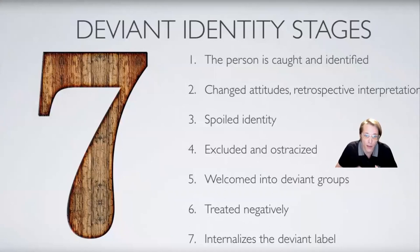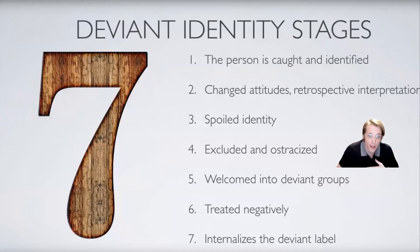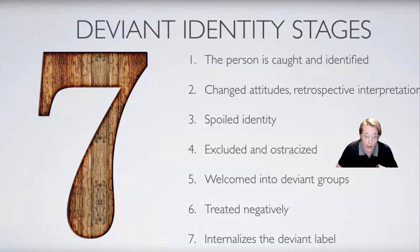The others identify seven stages of the deviant identity career — that is, a person shedding their innocent identity for a deviant one. First, the person is caught and publicly identified. Next, people change their attitudes towards him, her, or them, and use retrospective interpretation, where they think of a person's past behaviors and reframe them in a different light. Thirdly, he, she, or they is given a spoiled identity — a tarnished reputation.